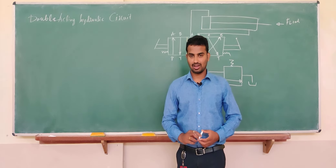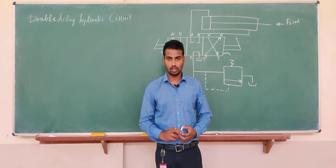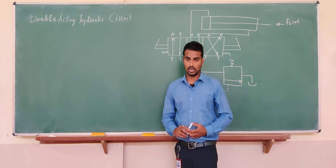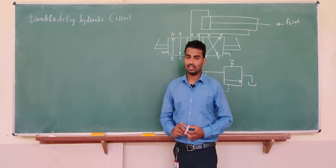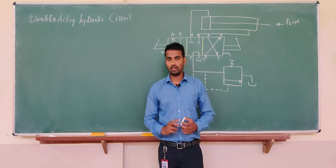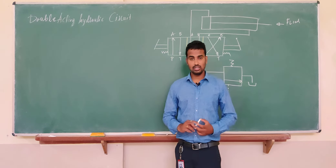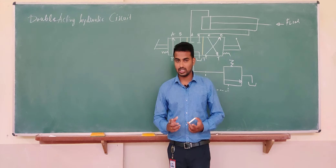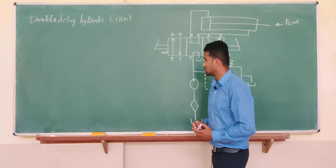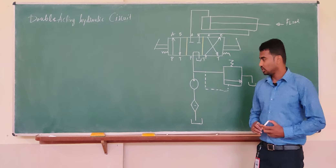Welcome back to the fluid power engineering class. In the previous class we discussed the single acting cylinder. In today's class we will be discussing the double acting hydraulic circuit. In the case of a single acting cylinder, the forward stroke happens because of fluid pressure and the return stroke is by spring pressure. In the case of a double acting hydraulic circuit, both the forward and return strokes are due to fluid pressure.